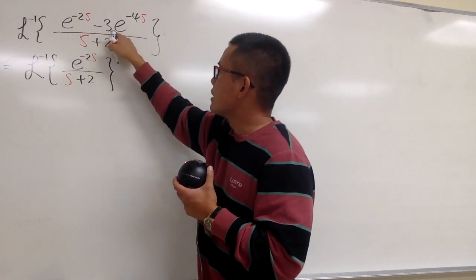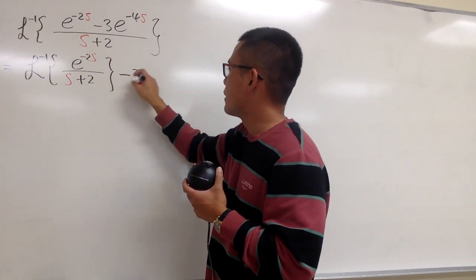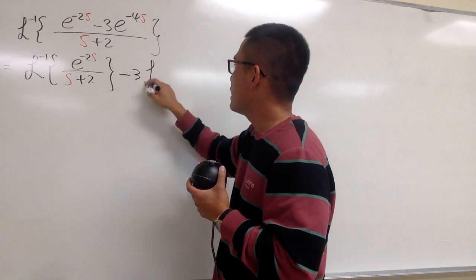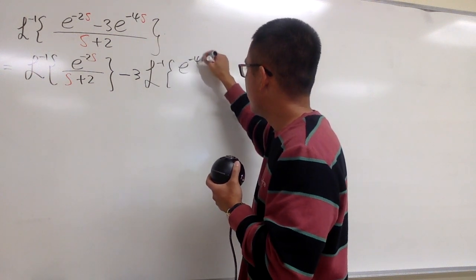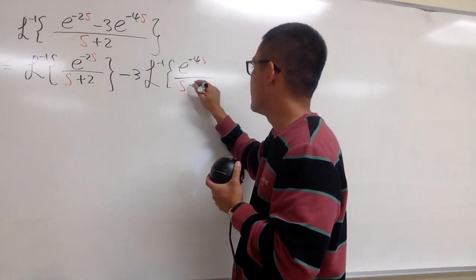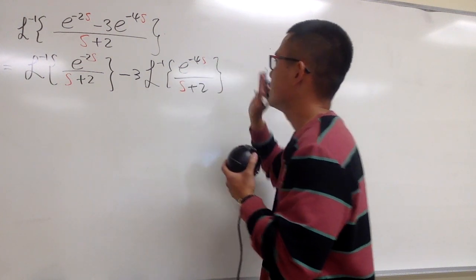And then this is negative 3, it's a constant multiple, so let me take that to the front. Then we have the inverse Laplace of e to the negative 4s over the same denominator, which is s plus 2.